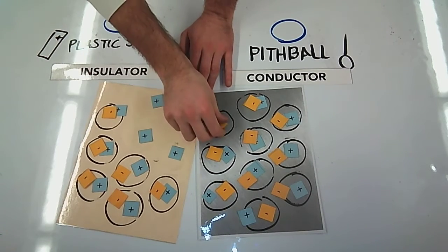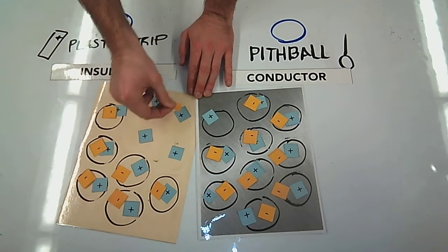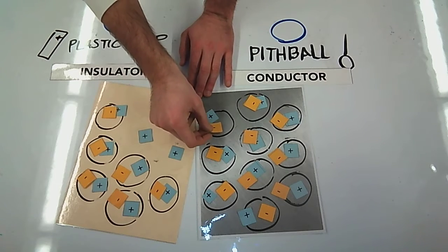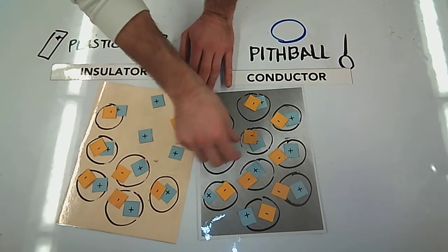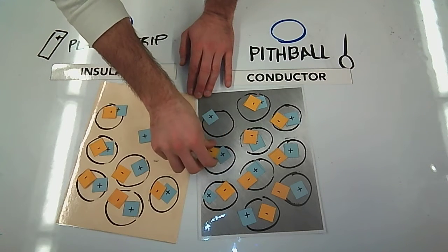Since they're touching, these electrons actually can move over and jump over to my insulating strip. I'm going to have some electrons jump over here.